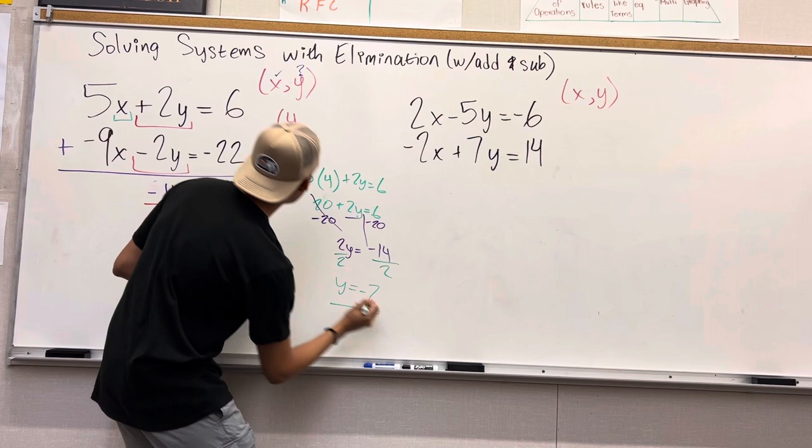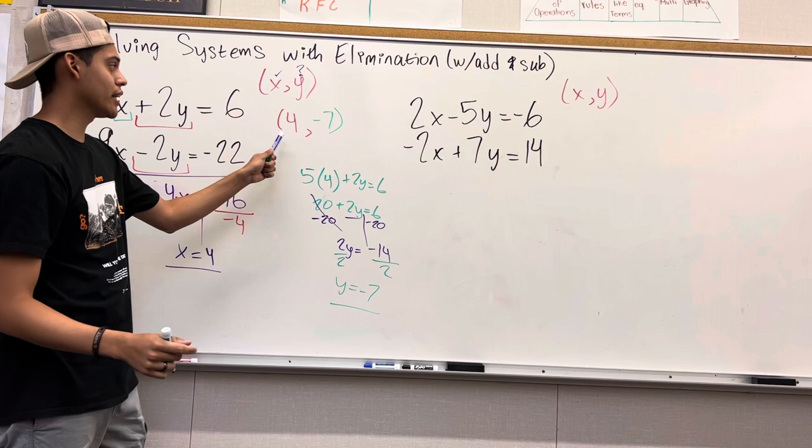We have 2y equals negative 14. Divide 2 by both sides because we want y by itself. We have y equals negative 7. And now we know our y value, negative 7. So the point where the two lines intersect is 4 comma negative 7.